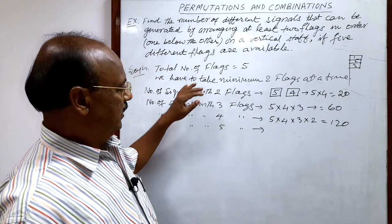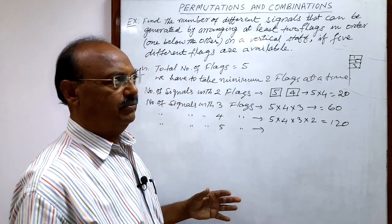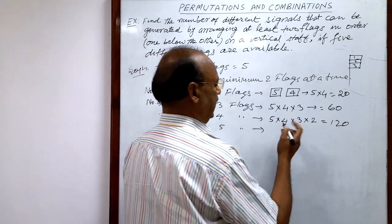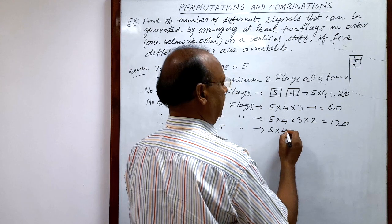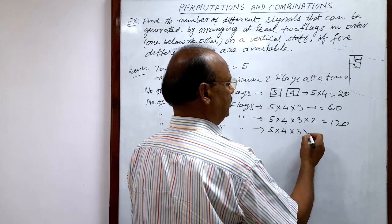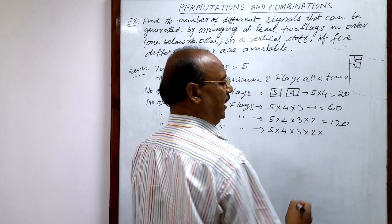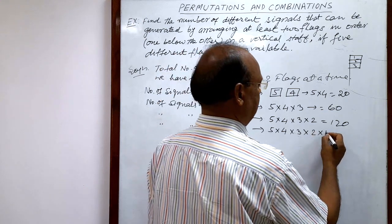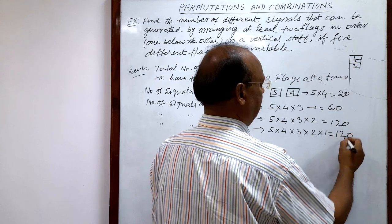If we make signals using all five flags together, the first flag can be selected in five ways, the second in four ways, the third in three ways, the fourth in two ways, and the fifth in one way. The total is 5 × 4 × 3 × 2 × 1 = 120.